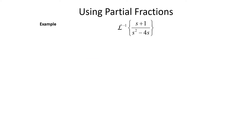So far we've just been matching formulas directly, but it's not always that straightforward. Sometimes we'll deal with expressions that don't match our formulas exactly, but we can rewrite them using methods from algebra or calculus. For example, if we have a ratio like (s+1)/(s²−4s) where we can factor the denominator, we can rewrite it using partial fractions and then take the inverse Laplace transform of each term.